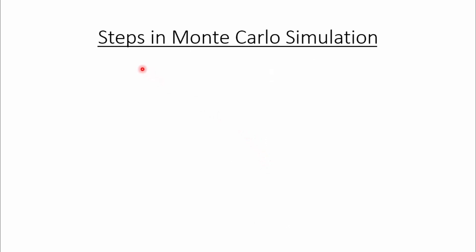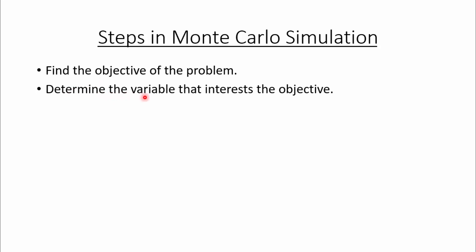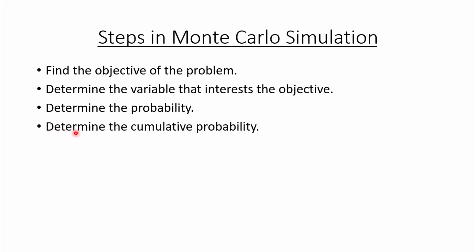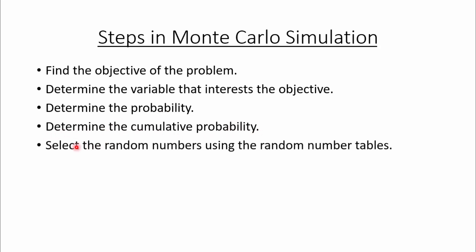Before going into the problem let us understand the steps in Monte Carlo simulation. The first step is to find the objective of the problem — we need to find out whether it is to maximize or to minimize a particular value. Then we need to determine the variable that affects the objective function. Next is to determine the probability — in Monte Carlo simulation probability is either directly given or we need to calculate it — and after that we determine the cumulative probability. Then we need to select the random numbers using the random numbers table.